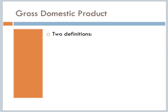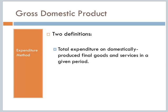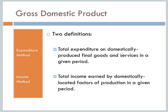To do that, we really have two different definitions, or two different angles of finding this measurement. The first angle we're going to call the expenditure method: total expenditure on domestically produced final goods and services in a given period. Basically this is price times quantity, and we add them all up for final goods and services to see how much we spend on each one of these. The next one is the total income method, or the total income earned by domestically located factors of production in a given period.